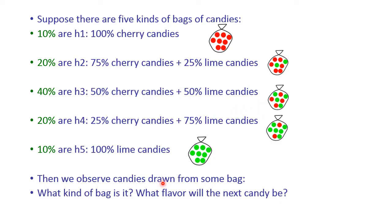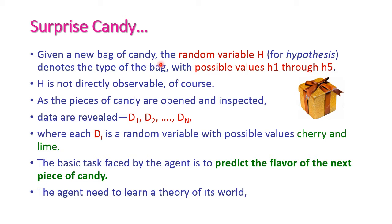Suppose we take any one bag — we don't know what kind of bag it is. We open that bag and take one candy, but we don't know which candy it will be. We randomly pick one candy bag; the variable is h and we don't know which type of bag this is. We have five different types of bags h1 through h5, and h is not directly observable.